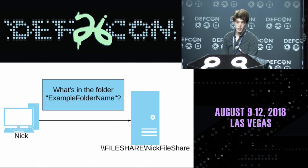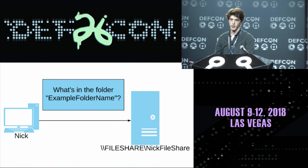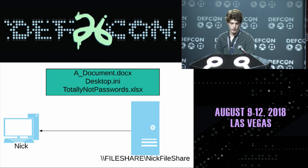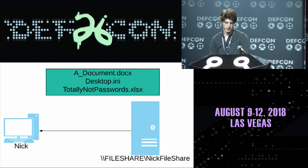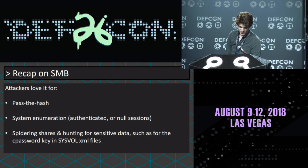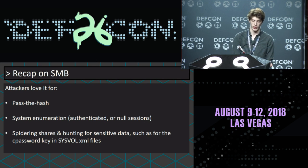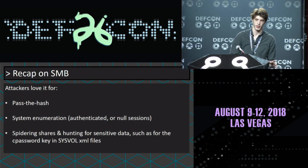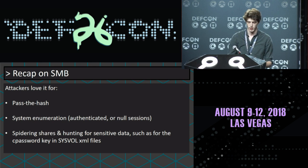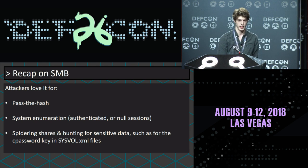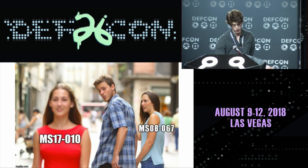A typical exchange in SMB looks like this: someone says, hey, what's in this folder? And SMB will reply: you've got documents, desktop, and some not-password file. We love it for pass the hash, for system enumeration, for spidering shares and hunting for sensitive data — like the GPP password vulnerability in SysVol, and obviously for MS17-010.